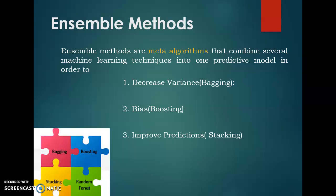In parallel ensemble methods, the base learners are generated in parallel. The basic motivation of parallel methods is to exploit independence between the base learners, since the error can be reduced dramatically by averaging. So we are exploiting the independence between the base learners so that we can reduce the errors.